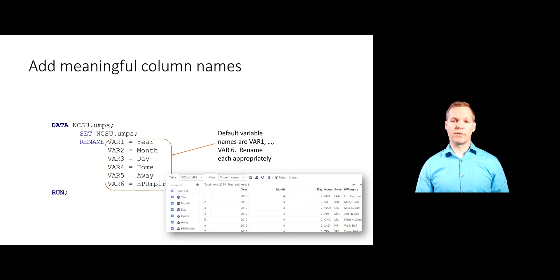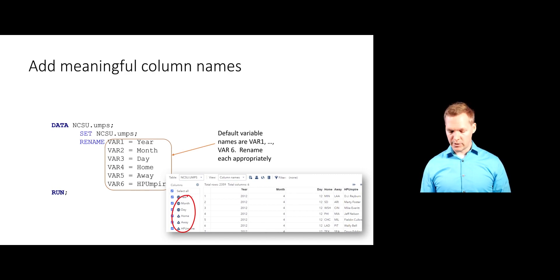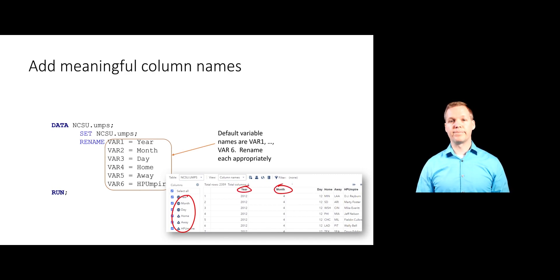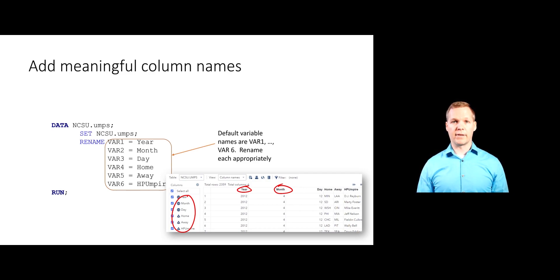Now if you look at the output, you will see much better-looking variable names. That's how we can manipulate variable names whenever they are not provided in the raw data file.